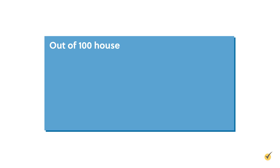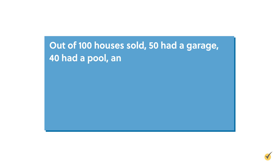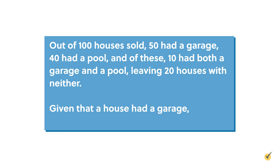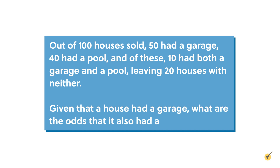Out of 100 houses sold, 50 had a garage, 40 had a pool, and of these, 10 had both a garage and a pool, leaving 20 houses with neither. Given that a house had a garage, what are the odds that it also had a pool?